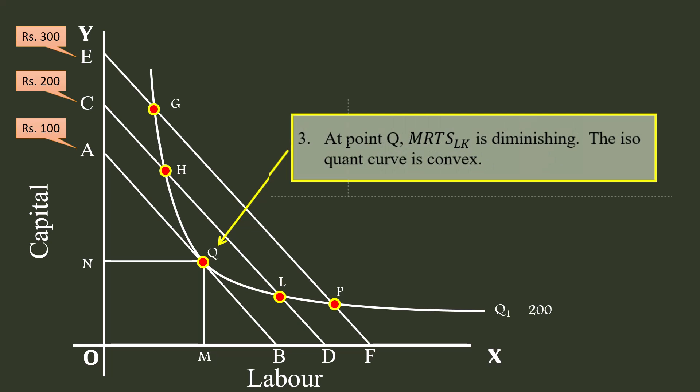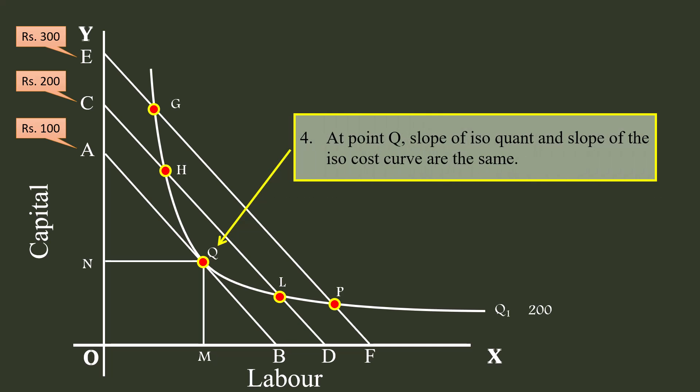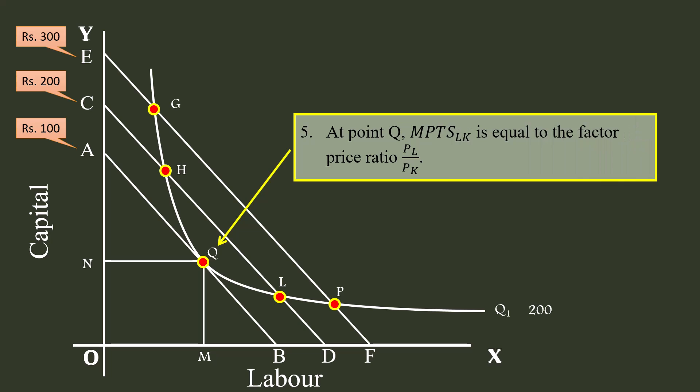Third, at point Q, the marginal rate of technical substitution of labor for capital is diminishing. The isoquant curve is convex. Fourth, at point Q, the slope of the isoquant and the slope of the isocost curve are the same.